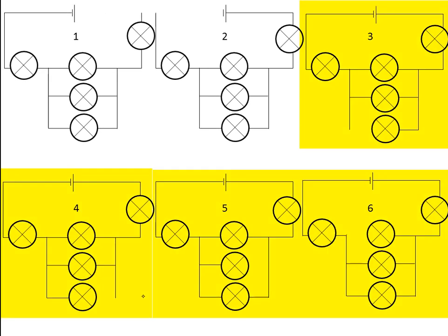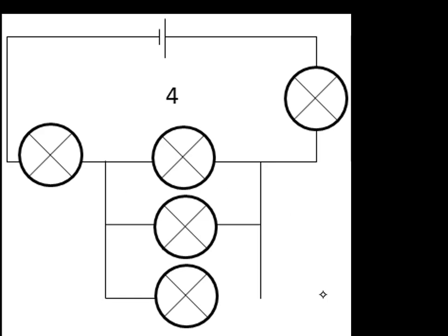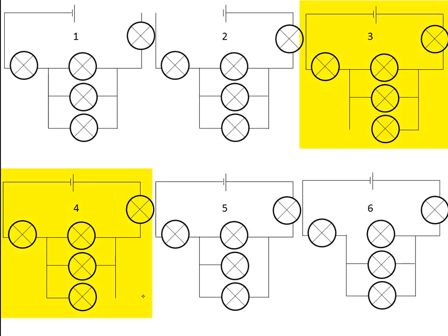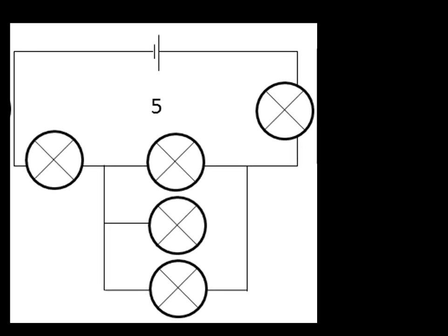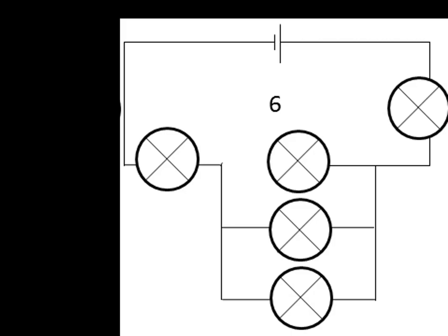In circuits three, four, five, and six, notice that the breaks are always in the branches of the circuit. In circuit three, the break is on the negative side of the third bulb; in circuit four, on the more positive side of that same bulb. In circuit five, we've broken the connection to the middle bulb in the branched section. In circuit six, we've broken the connection joining the third bulb in the parallel section to the main part. Which bulbs, if any, will shine?